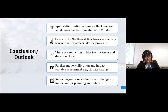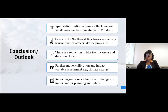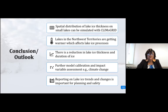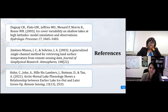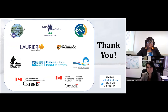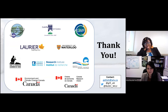In summary, CLIMO Grid has the capability to spatially distribute lake ice thickness on large lakes, which has been established, and on small lakes it can be modified — work is ongoing. We have established that lakes in the Northwest Territories are getting warmer, affecting lake ice processes, with a reduction in lake ice thickness and duration. Our outlook includes further model calibration, variable impact assessment for depth, size, and climate change effects, with the main goal being to report lake ice trends for planning, safety, and knowledge sharing.